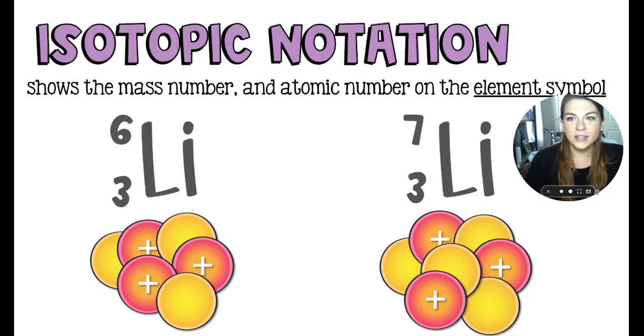Here we have isotopic notation, which shows the mass number on the top and the atomic number on the bottom, right beside the element's symbol. Lithium is Li. It's always going to be atomic number three, regardless of its mass,